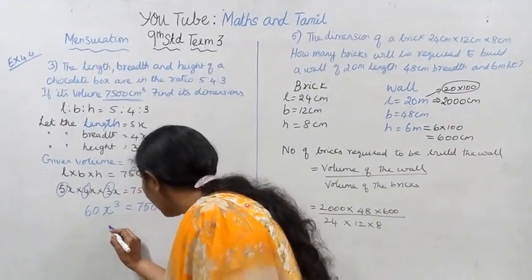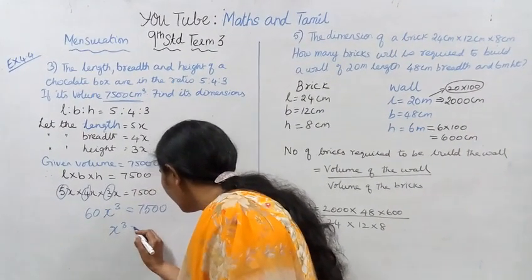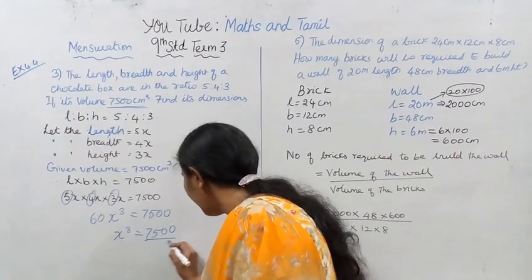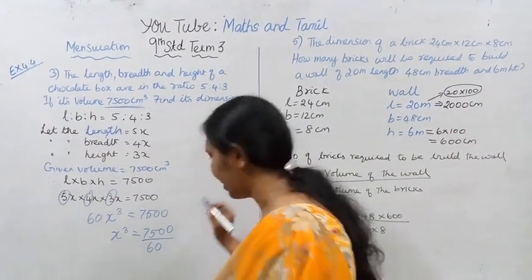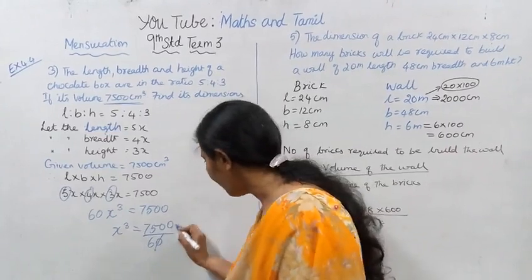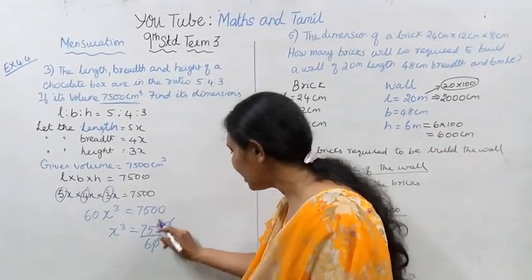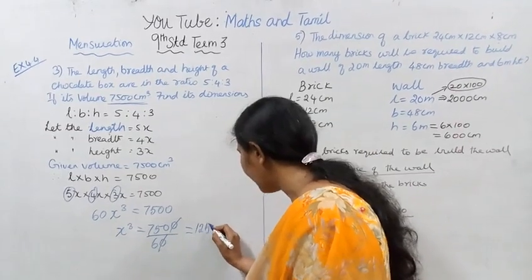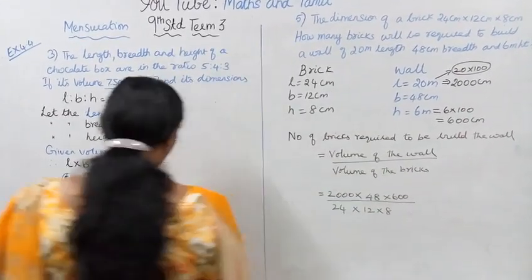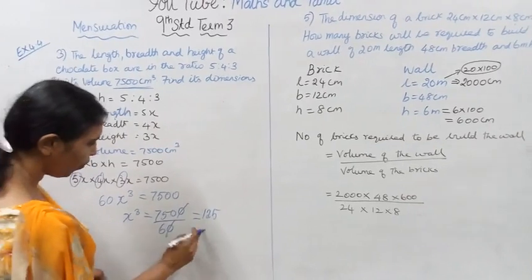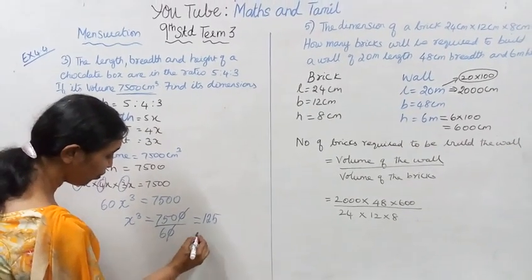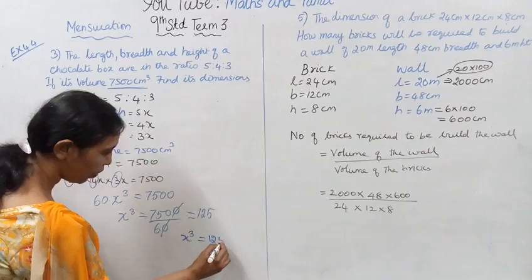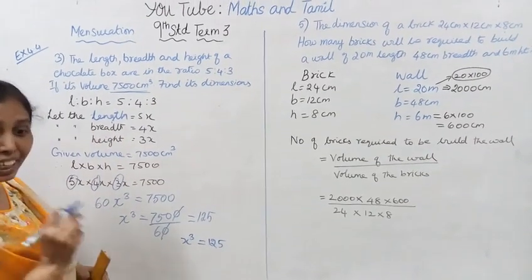x cubed equals 7500 divided by 60. Cancelling the zeros, 7500 divided by 60 gives 125. So x cubed equals 125.